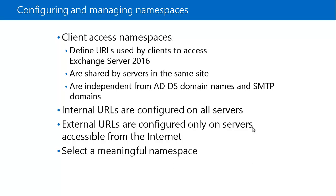If you have a larger organization with multiple sites, you can implement one or more namespaces. You can configure each virtual directory with an internal URL and an external URL. Internal users have a different URL and external users have a different URL to access the same Exchange Server. You should configure internal URLs on all Exchange Servers, and external URLs only on those Exchange Servers accessible from outside the organization.